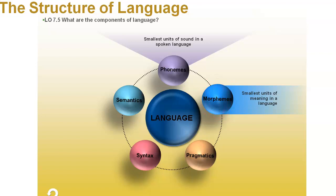Morphemes, on the other hand, are the smallest unit of meaning in a language. It's not just a random sound — if you hear this unit, it has a purpose and a meaning. We also have pragmatics, which are the patterns of intonations and social roles associated with language. So the way you ask a question and the way you talk to people — that's the pragmatics.